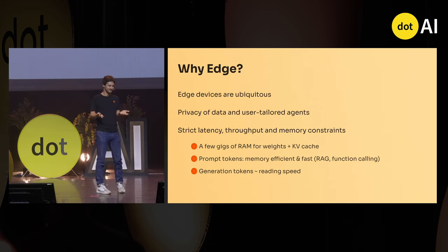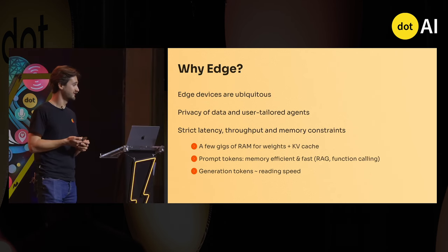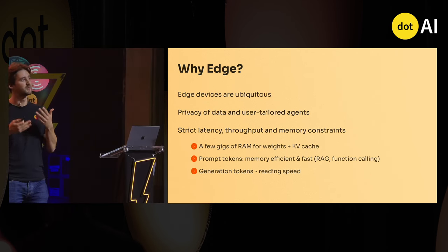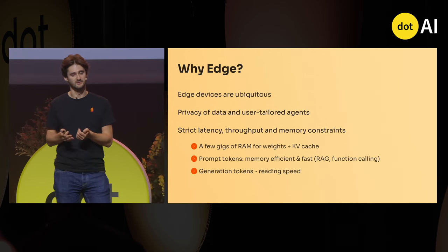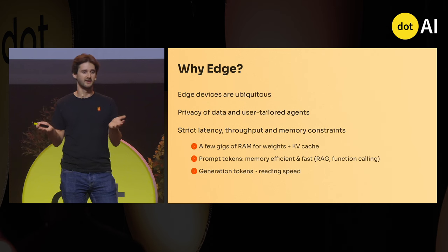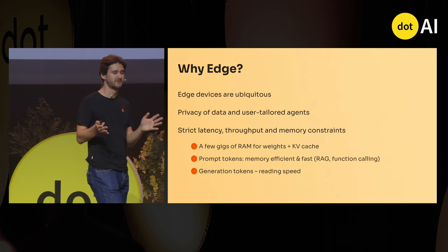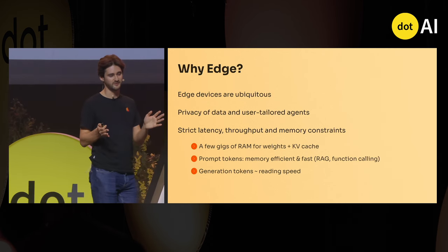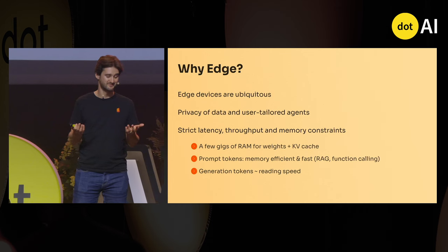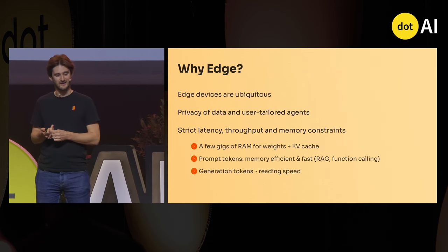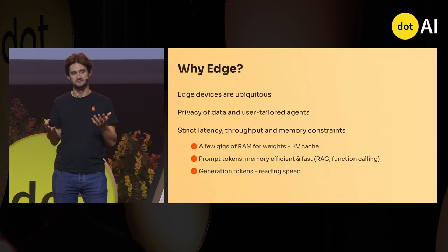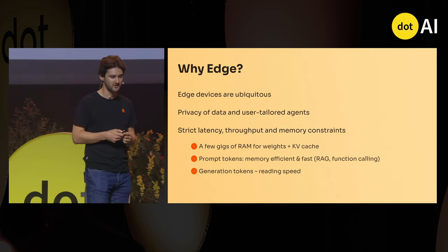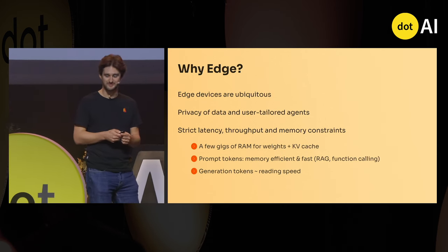The fun thing, for a scientist like me, is that it comes with a lot of nice constraints. You want to be able to generate prompt and generation tokens at reading speed — almost 10 tokens per second — which is a lot for edge devices. And you also have a lot of constraints on the memory, so you want to fit the model into a few gigabytes of RAM.